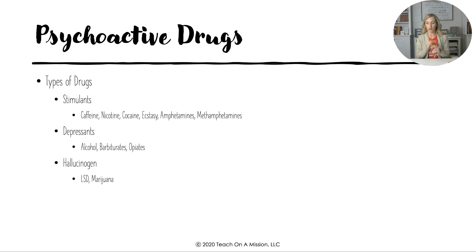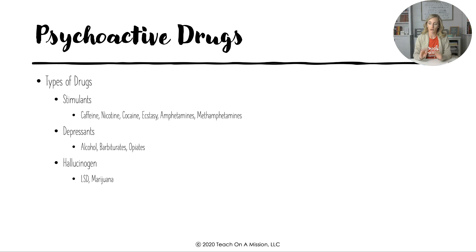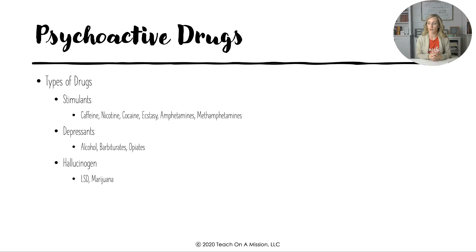Depressants include alcohol, barbiturates, and opiates — opiates including heroin interact with endorphins. Hallucinogens include LSD and marijuana. Make sure you remember the difference between physical and psychological dependence and withdrawal. The brain can become addicted to anything, but can only become physically addicted to substances that interact at the neurotransmitter level, replacing our natural supply, which makes physical withdrawal much harder — causing tremors, sweating, and vomiting.